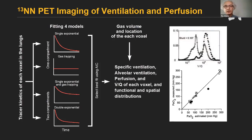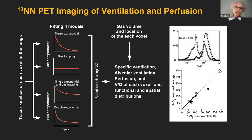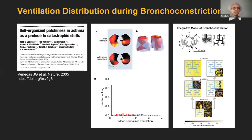To validate the VQ estimate based on that method, we performed animal studies with highly heterogeneous ventilation and perfusion conditions in the lungs and could demonstrate that the arterial oxygen partial pressure estimated from the imaging-derived VQ distributions could predict the measured arterial oxygen partial pressures.